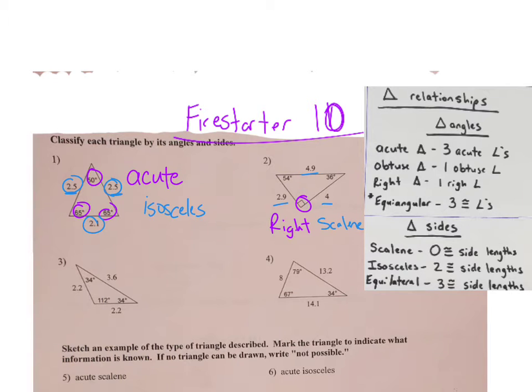Number three, I see 112 degrees, which tells me that I know it's going to be obtuse. And then I see, look at the sides. I see 2.2 and 2.2, and that is going to be isosceles. Two congruent side lengths.